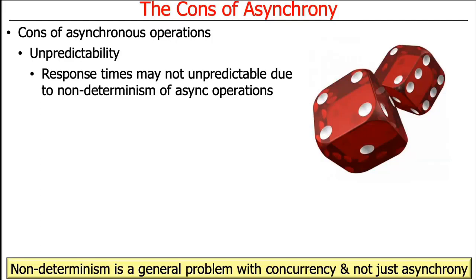Everything's not unicorns and rainbows though. One problem with asynchronous programming is that response times may be less predictable due to the inherent non-determinism of asynchronous operations. We touched on this with Java parallel streams, where the apply phase wouldn't always run in lockstep. Asynchronous models like Java CompletableFutures take that to the extreme — everything runs in whatever order it happens to, and you may get results back in a very different order than you invoked them.